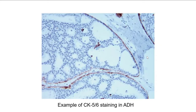Here's an example of cytokeratin 5-6 staining in a case of atypical ductal hyperplasia. The uniform cells filling the lumen and forming punched-out spaces are negative. It's not uncommon to see scattered positive cells, but for the most part you have a uniform population of cells that are negative for cytokeratin 5-6.